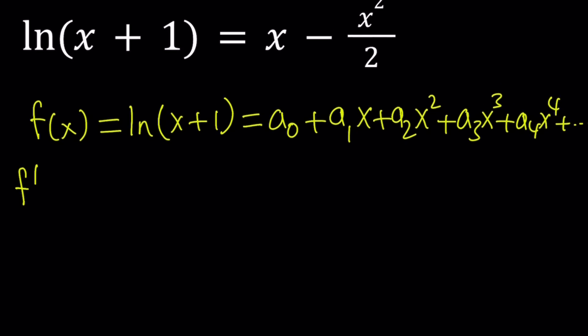So the first derivative of ln(x+1) is 1 over (x+1). The ln function is easy to differentiate. You just differentiate it and then divide by the function itself. The derivative of the infinite polynomial is: a₀ is a constant, so its derivative is 0. The derivative of a₁x is just a₁.